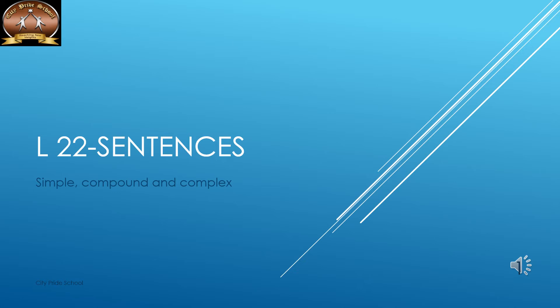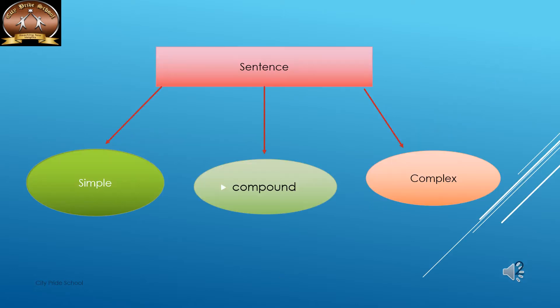Good morning children. Lesson 22: sentences — simple, compound, and complex. According to the structure of the sentence, it is divided into three types: simple, compound, and complex.